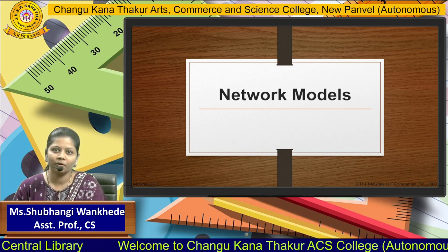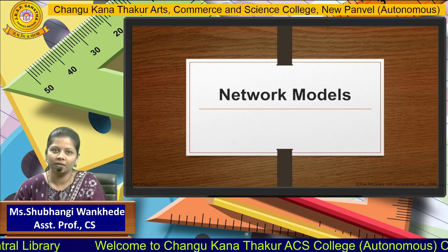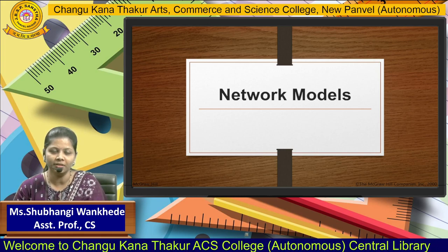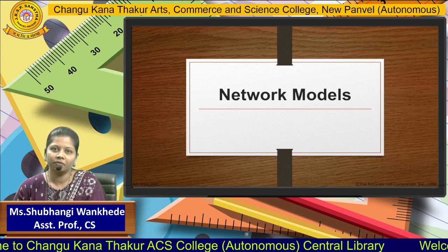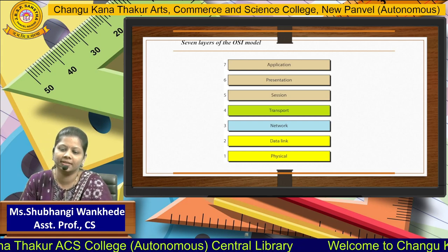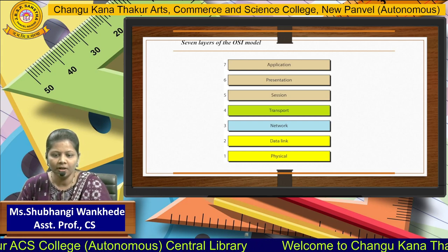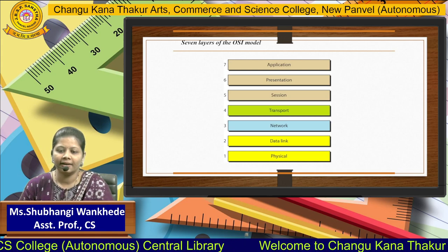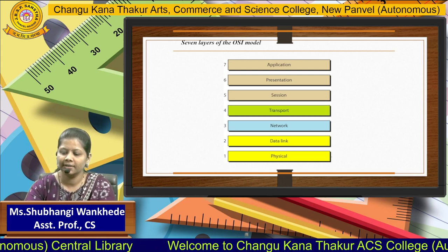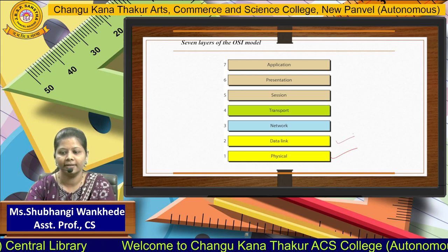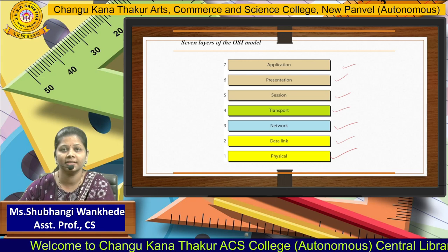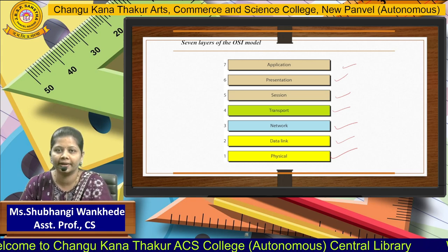Hello, today we are going to learn about computer networks — a very basic topic — that is network models in computer networks. The most basic model considered is the OSI model, and it has seven layers as you can see in the diagram. There are seven layers: the first layer is physical layer, second is data link layer, network layer, transport layer, session, presentation, and application.